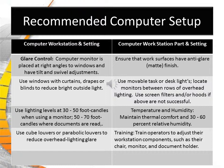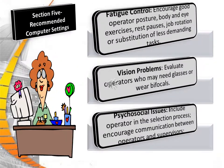Glare control: the computer monitor is placed at right angles to windows and should have tilt and swivel adjustments. Use lighting levels at 30 to 50 foot candles when using the monitor, and 50 to 70 foot candles when documents are read. Fatigue control: encourage good operator posture, body and eye exercises, rest pauses, and job rotation or substitution of less demanding tasks. For vision problems, evaluate operators who may need glasses or wear bifocals. Psychosocial issues: include the operator in the selection process and encourage communication between operators and supervisors.